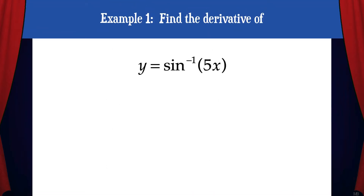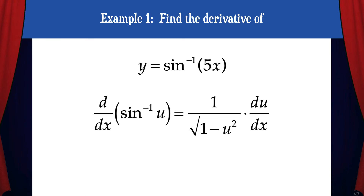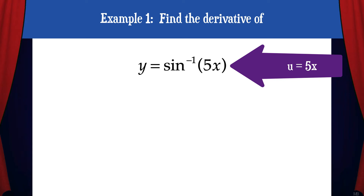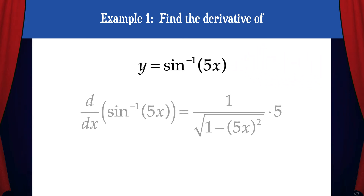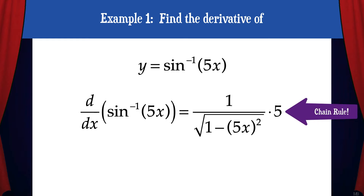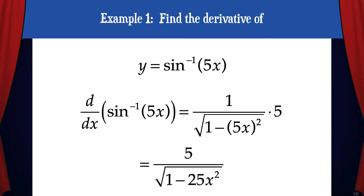Example 1: Find the derivative of y equals sine inverse of 5x. To solve this we're going to need to use the derivative of sine inverse u, which is 1 over the square root of 1 minus u squared times du/dx. In this case u equals 5x, so when we substitute that in we get 1 over the square root of 1 minus the quantity of 5x squared times 5, due to the chain rule. This simplifies to 5 over the square root of 1 minus 25x squared, and that's the derivative.